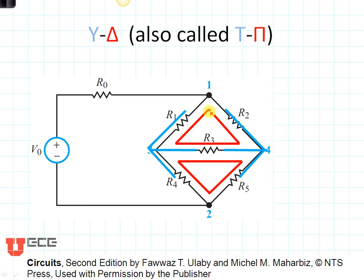These circuits are also called T or pi. You can kind of see the T right here, and you can see the pi right here as well. So those are Y and delta portions of this particular circuit.